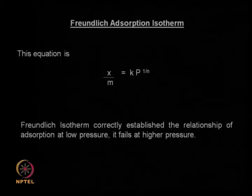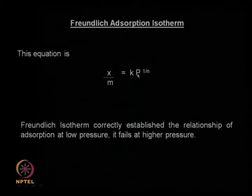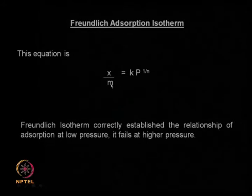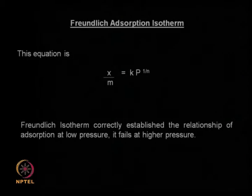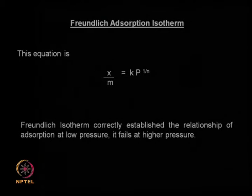The Freundlich adsorption isotherm equation is: x/m = k·p^(1/n), where p is the pressure, k is a constant, x is the amount of solute adsorbed, and m is the amount of adsorbent. The value of the exponent determines the relationship between pressure and the amount of solute adsorbed. This equation is good at low pressure but does not work well at high pressure.